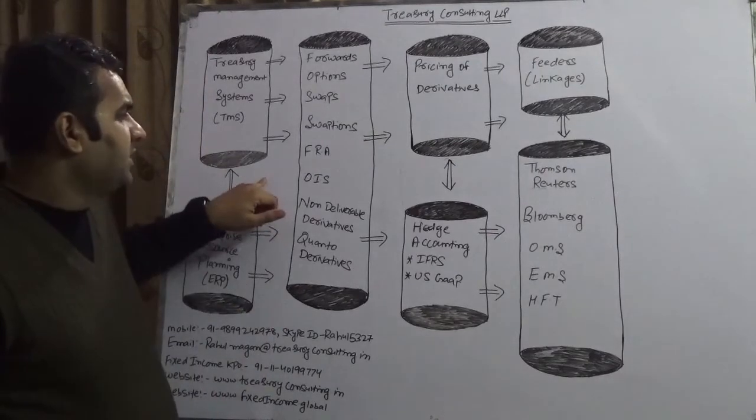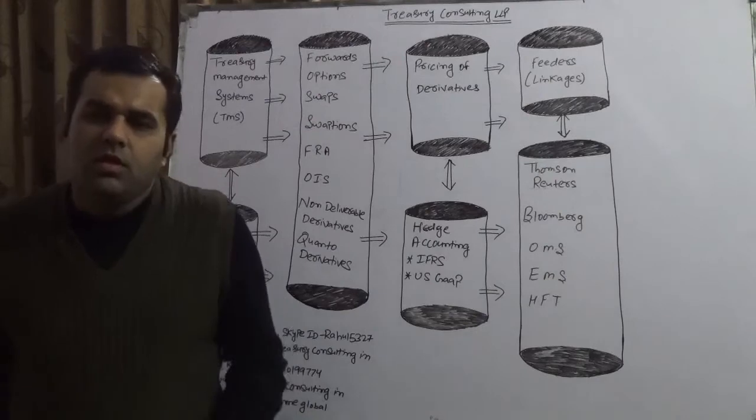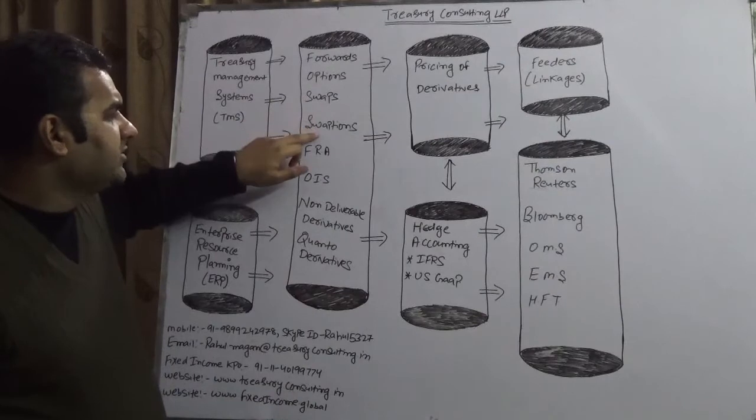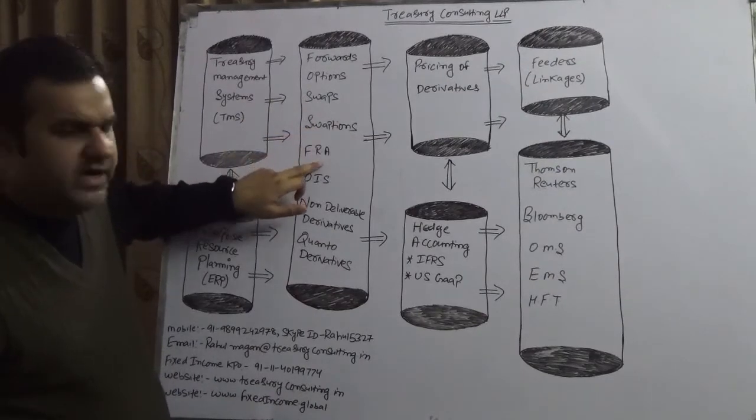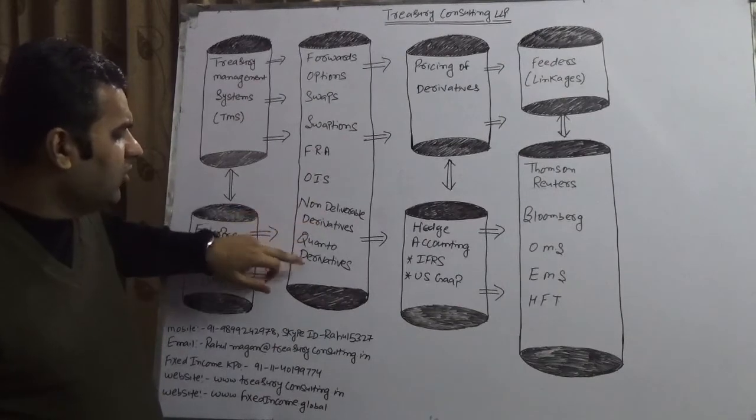This is the first issue. Another issue is the issue of pricing. Either it's a forward contract, an option contract, a swap contract, swap options, FRA forward rate agreement, overnight index swap, non-deliverable derivatives or quanto derivatives.